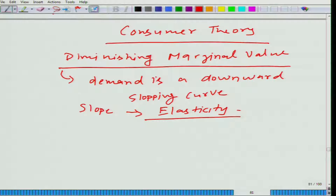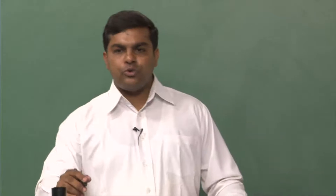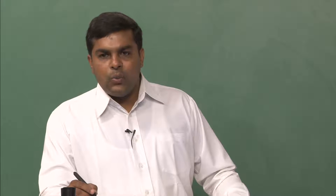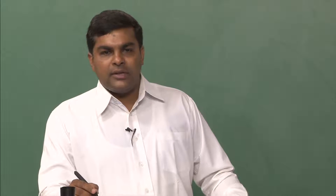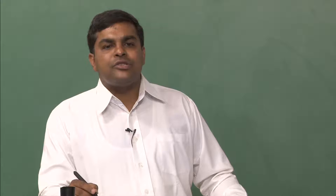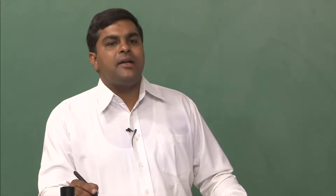Now, that is just a glimpse of what consumers do. What happens is that when you go to a market, you want to spend a certain amount of money. What you think is that there are several possible combinations of goods available in the market that you can buy.